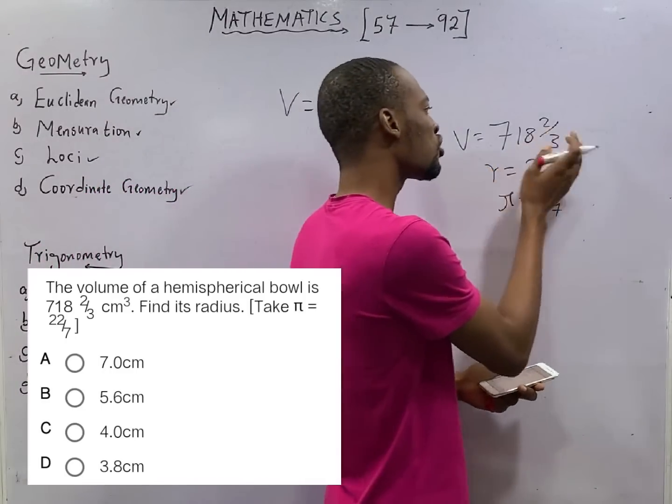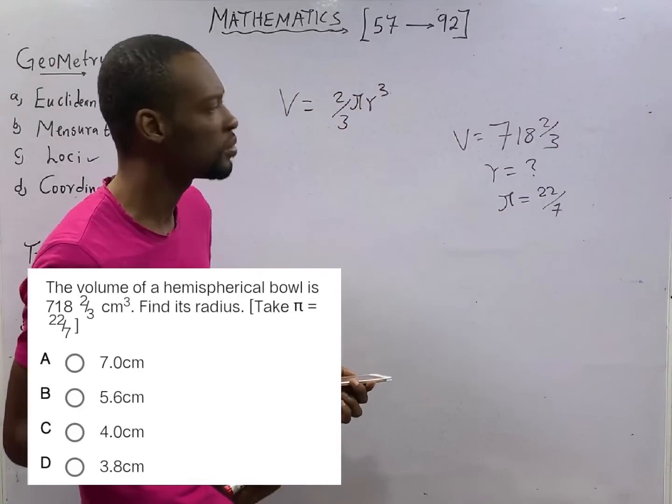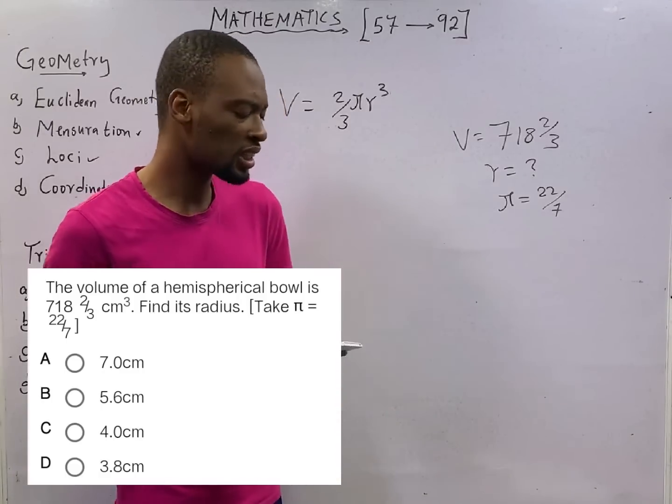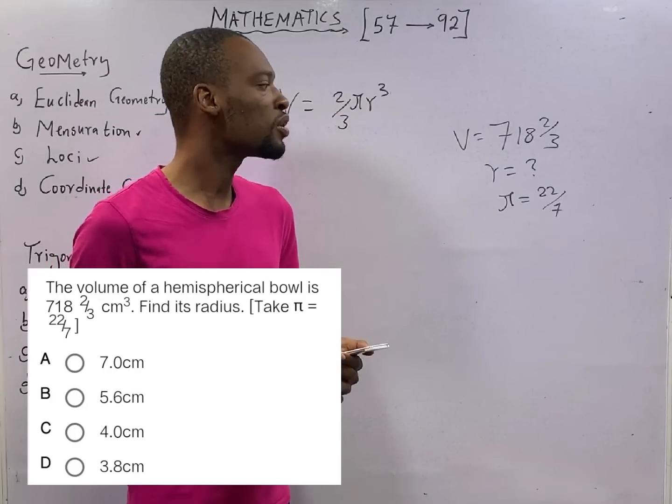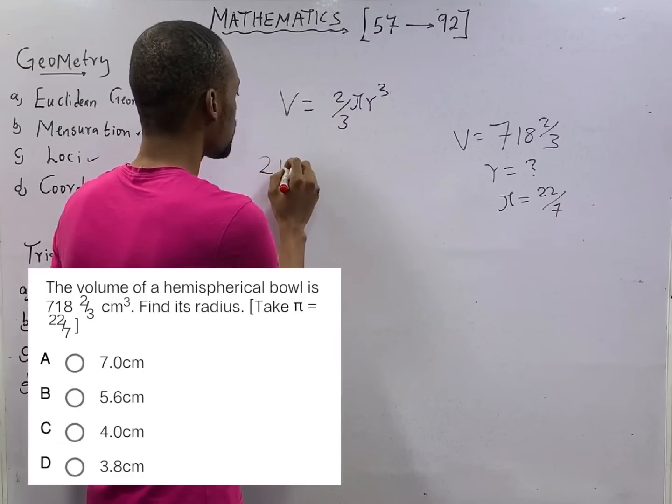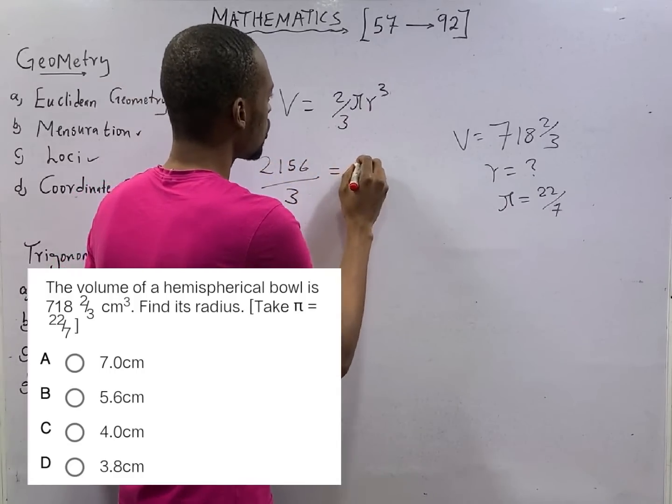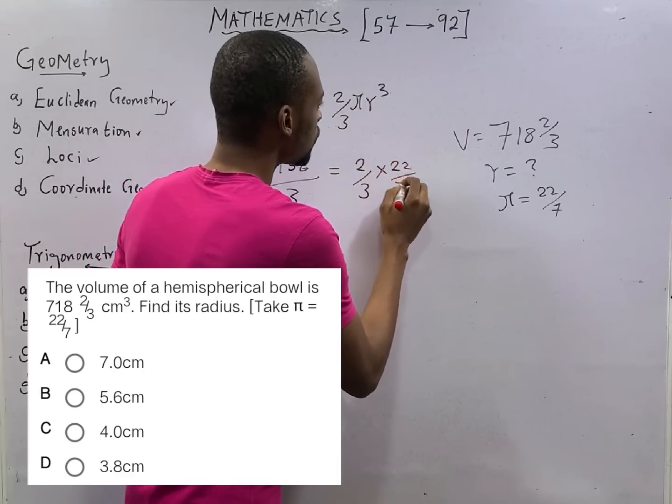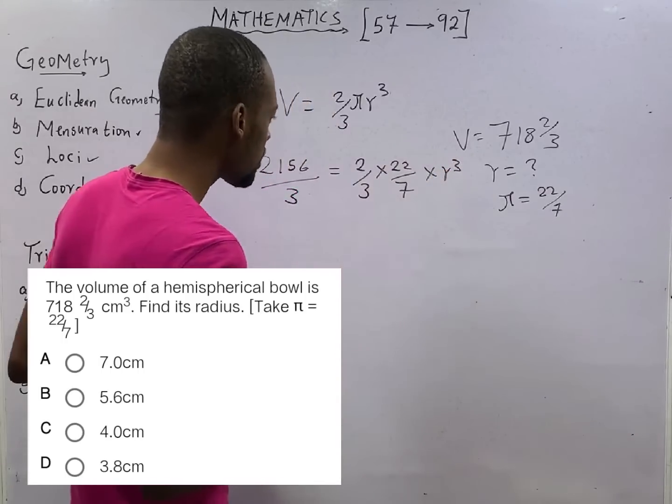And what is the volume? 718 2/3. That is a mixed fraction. We need to convert the mixed fraction to improper fraction. And that would be 718 times 3 plus 2 all over 3. That should be 2156 over 3 equals 2/3 times 22/7 times r raised to the power of 3.